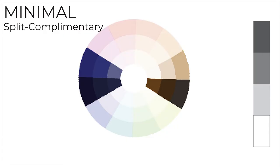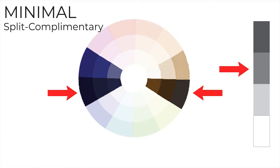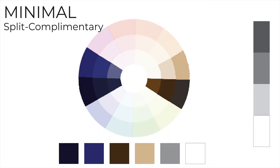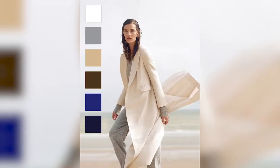Using the split complementary color scheme to choose your six colors based on the minimal style aesthetic — since most of the color schemes are shown in neutral colors — let's say you start with white, beige, and navy as the base colors. By shading the colors with black, you'll get the three other colors for your six-color palette. The beige and navy are complementary colors on the color wheel, which is why this color scheme works very well with the minimal style aesthetic. Adding white as the neutral base color, you can shade it with black to get your split complementary colors. Here is what it looks like.